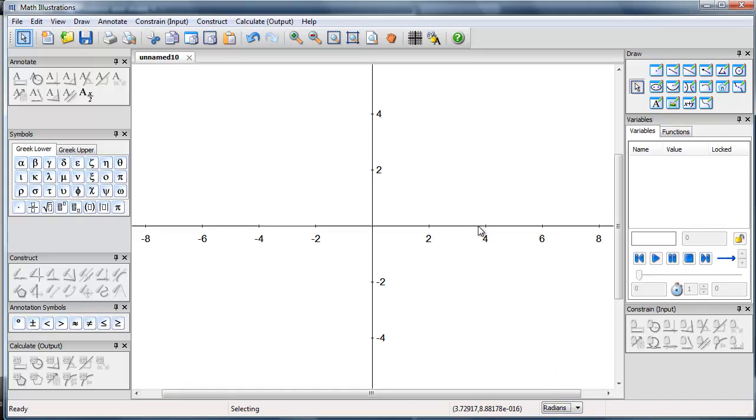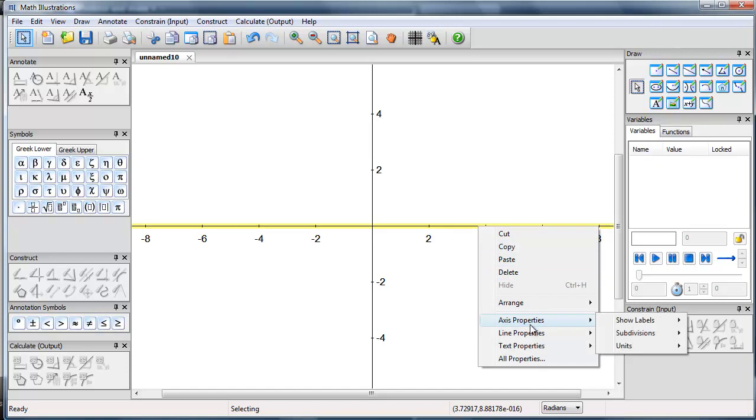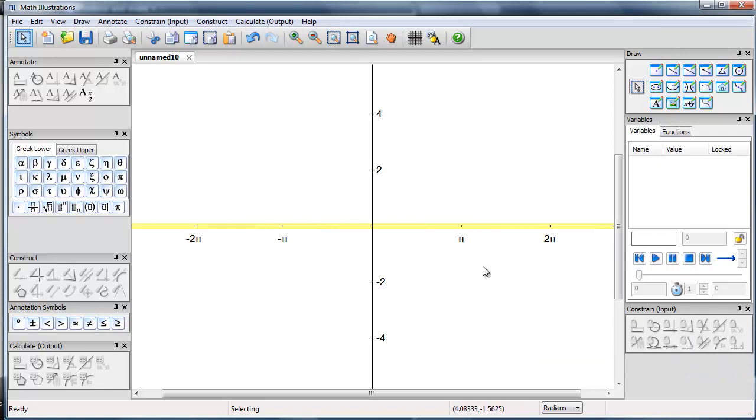And now I'd like to change my x-axis so it displays in radian units rather than decimal units. So I see I get a pi, a 2 pi, and so forth.